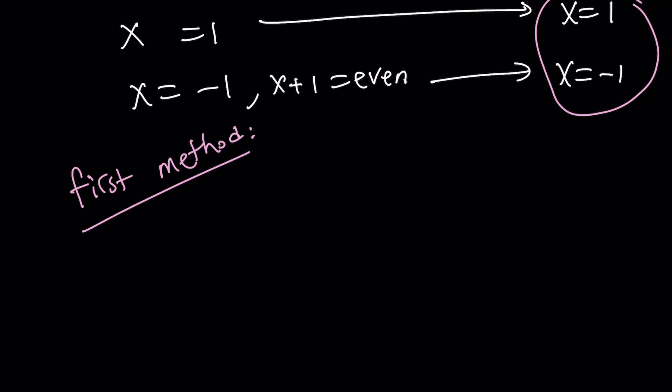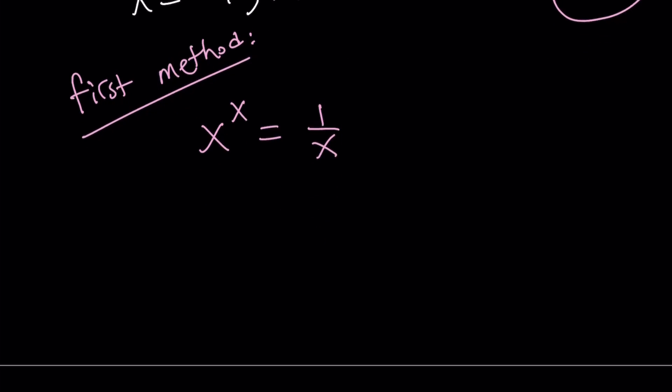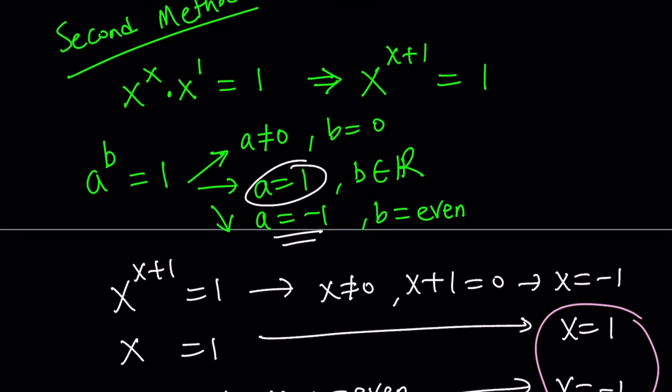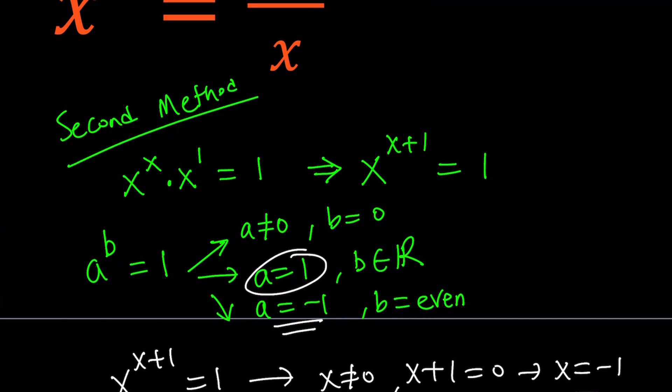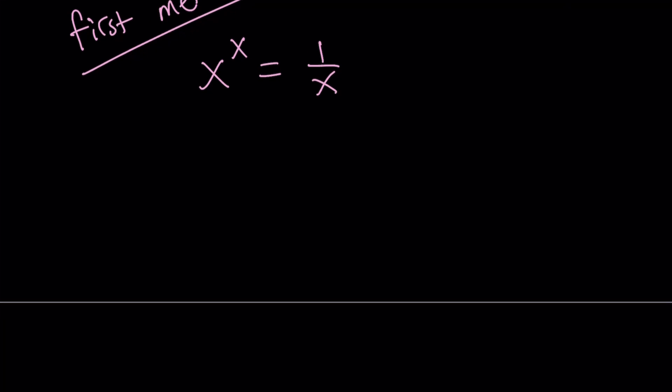So for our first method, we're going to do the following. Let me rewrite the original problem. We have x to the power of x equals 1 over x. Now, for the first method, remember, we did cross multiplication. And then we went by those three cases. This is going to be a different method.